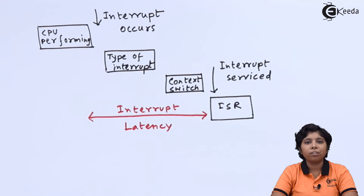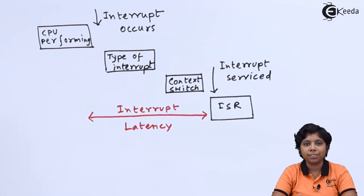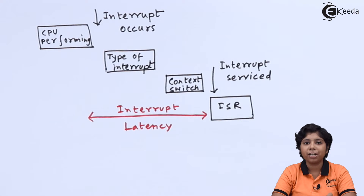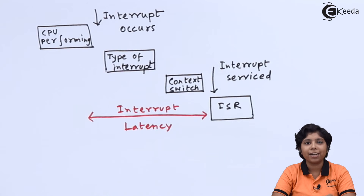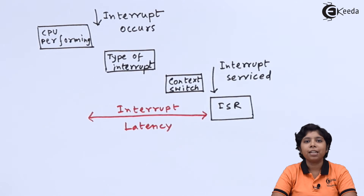Next, we will discuss dispatch latency. Once the interrupt has been serviced, the time taken by the scheduler dispatcher to stop one process and start another is known as dispatch latency. As described earlier, in a real-time system, the critical process must be allocated CPU immediately, so minimizing dispatch latency is just as important as minimizing interrupt latency. We will now see in the diagram how dispatch latency is made up inside an operating system.